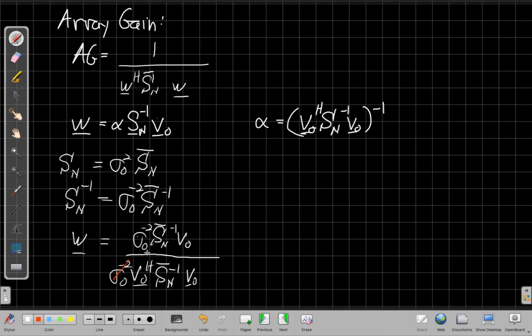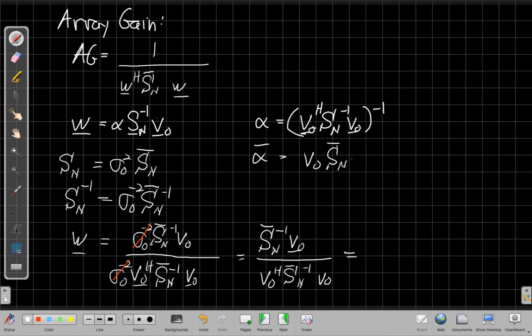And what happens is these sigma naught squareds cancel out, which sort of makes sense. It says if I scale this matrix by a constant, if I'm scaling this matrix by a constant, and it appears in the numerator and denominator, those constants are going to cancel out. Because if I rescaled it in the numerator, I won't need, I can also rescale the unity gain part. And I'll be left with something like this. So if I think of this, that's V naught Hermitian, SN bar inverse V naught. Or we could write this just to sort of be a little fancy. We could call this alpha bar, which is the version using SN bar.